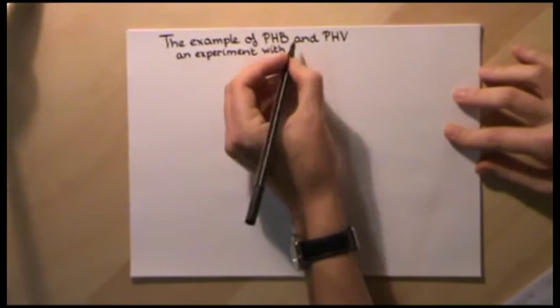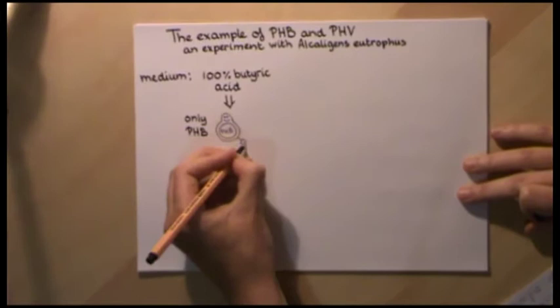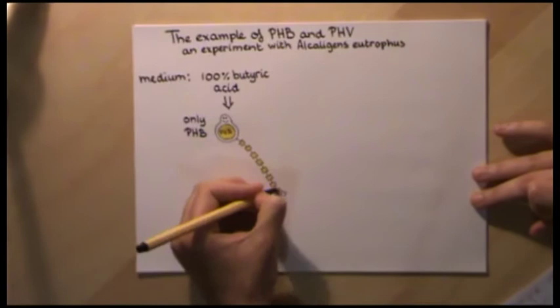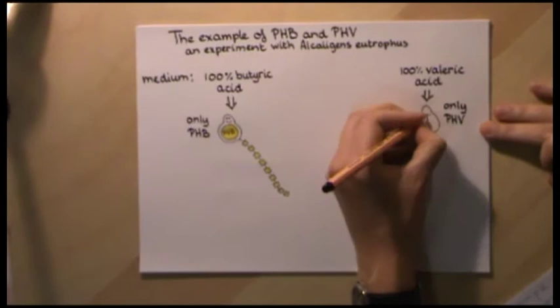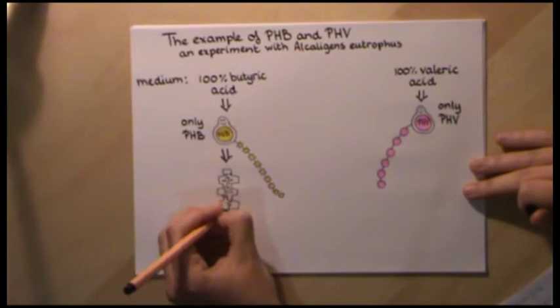Let's give the example of PHB and PHV. In an experiment with the bacteria Alcaligenes eutrophus, it was shown that bacteria growing on a substrate with 100% butyric acid only produced PHB. And bacteria of the same species produced only PHV when growing on substrates with 100% valeric acid.